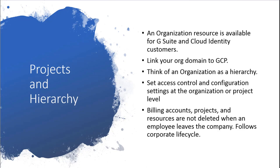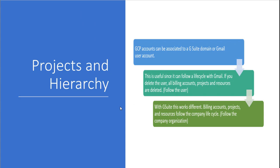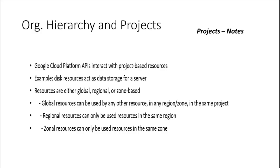GCP accounts can be associated to a G Suite domain or Gmail user account. When you deploy a GCP project, the APIs are considered part of that project — if you have two projects, you deploy APIs for those resources individually. Some resources will be global, regional, or zonal. With G Suite, you can allow outside users by simply adding their Gmail or G Suite account, or add a G Suite domain and have the administrator manage the organization and all its projects. You can also address chargeback by creating separate billing accounts or using the same billing account for all projects.